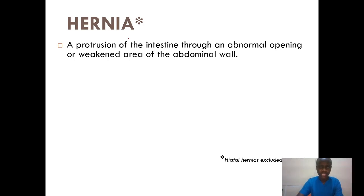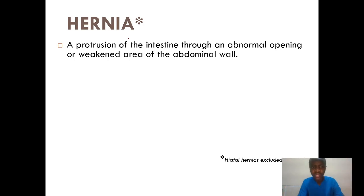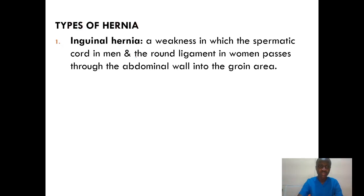Today let's look at the topic known as hernia. As a form of introduction, a hernia is always a protrusion of intestine through an abnormal opening or a weakened area in the abdominal wall. When there is any sort of weakening in the abdominal wall, the intestine protrudes through the abnormal opening — at that point we term it as a hernia.